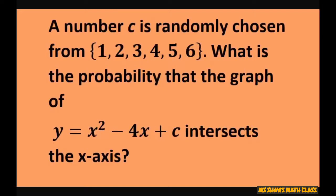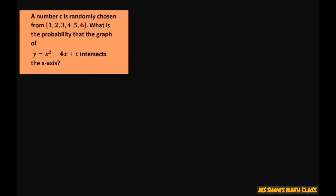Now basically what we're going to be doing is looking at the discriminant. Just remember the discriminant equals b squared minus 4ac. We want the discriminant to be greater than or equal to 0 to intersect. If it's less than 0, that means it doesn't cross the x-axis.